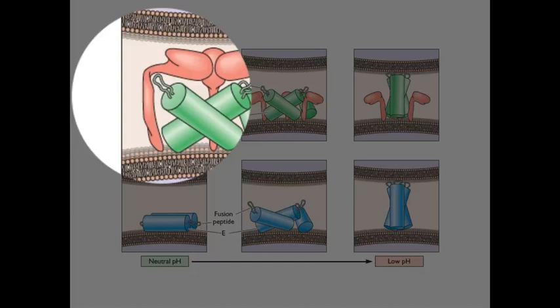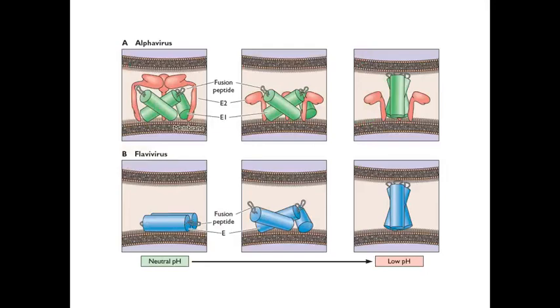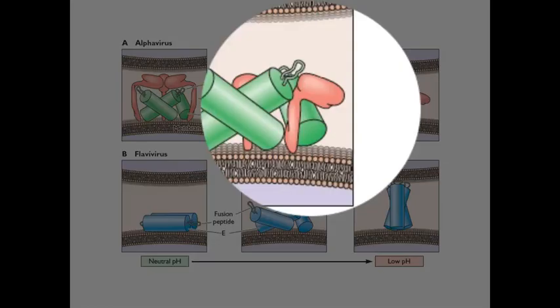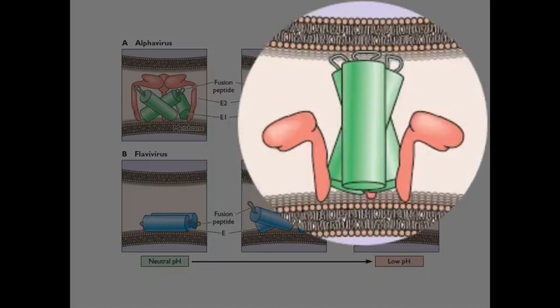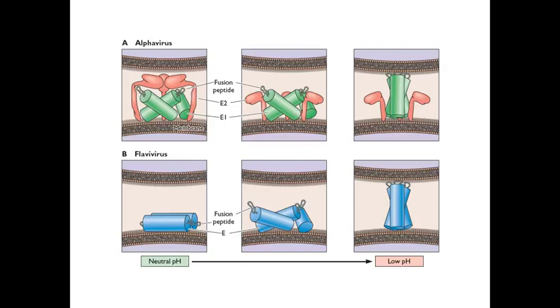The fusion peptides are hidden by a second protein. And then the second protein is cleaved and moved out of the way in order to get fusion. So very much like the HA has to be cleaved, these have to be cleaved. But it's not the actual fusion peptide in this case. It's a second peptide that masks it, if you will.